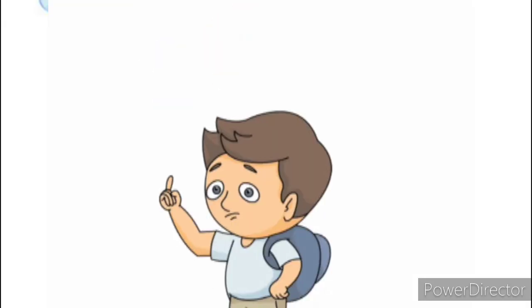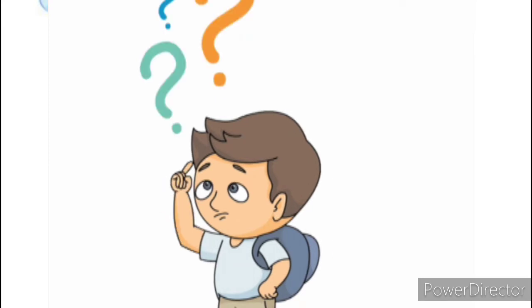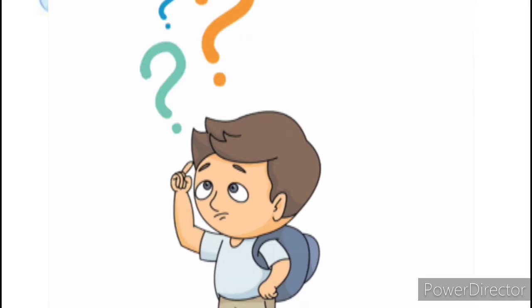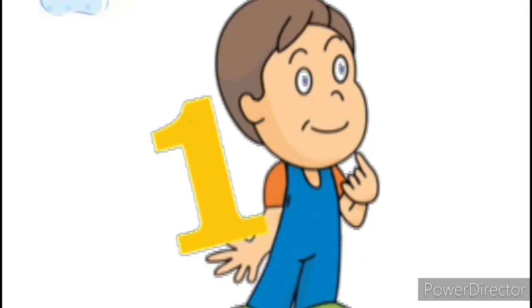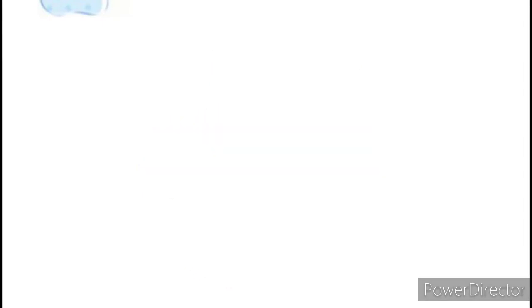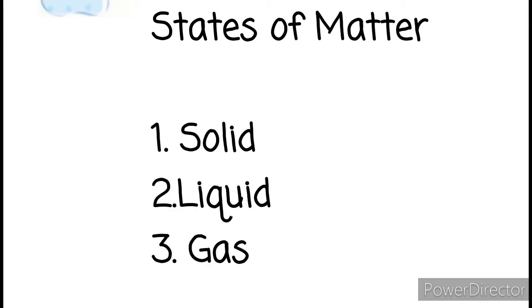Let's think about it. How many different ways can matter exist? Matter exists in three different ways. The three states of matter are solid, liquid, and gas.